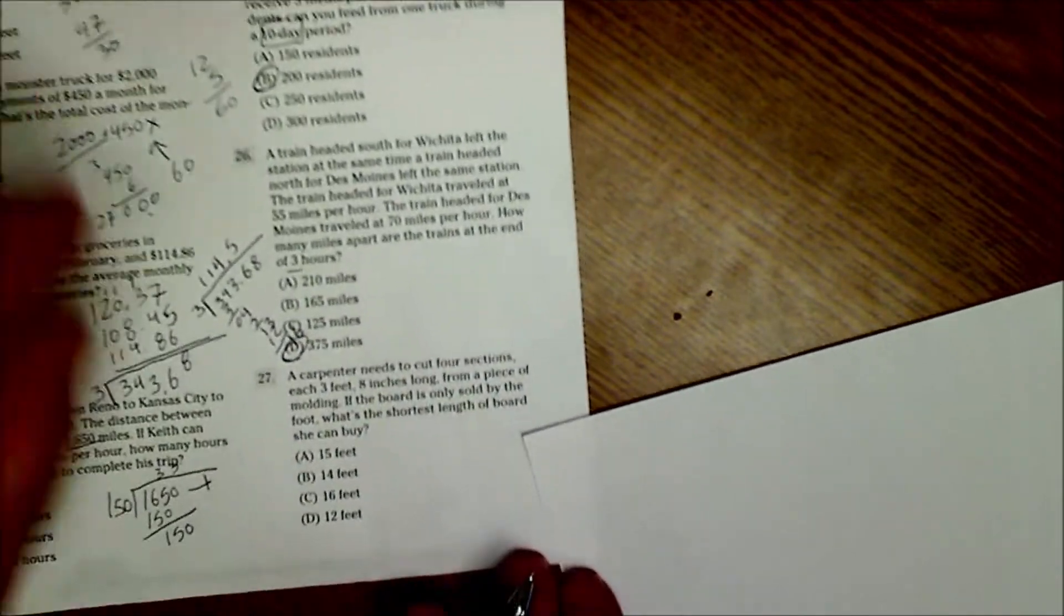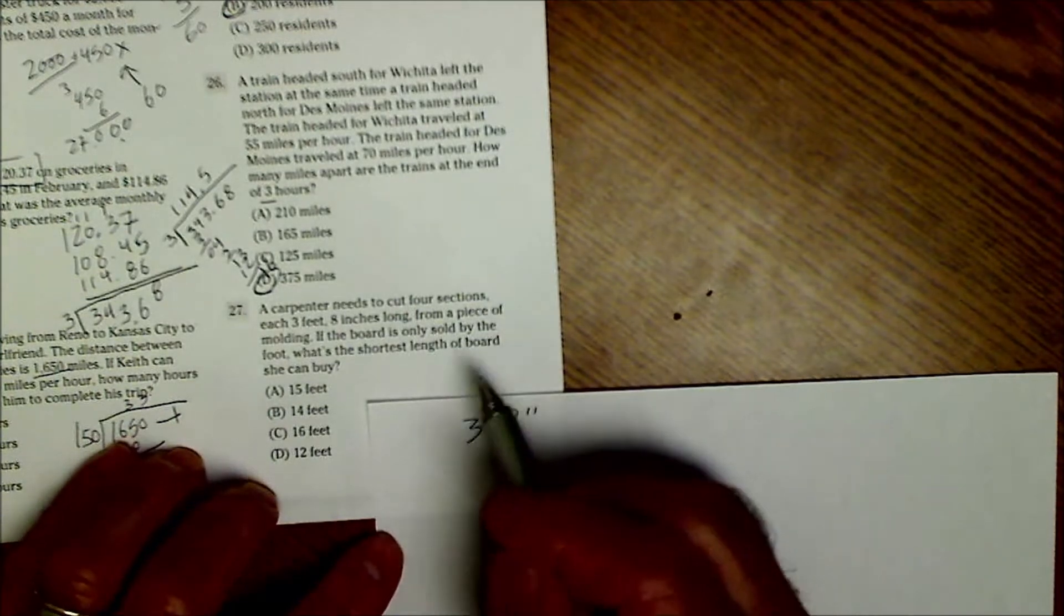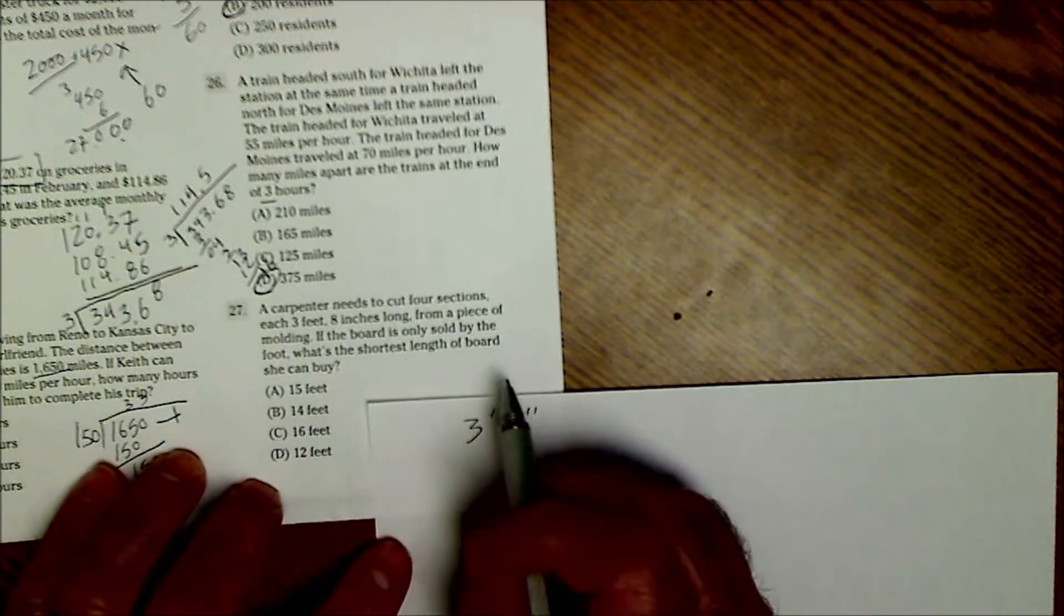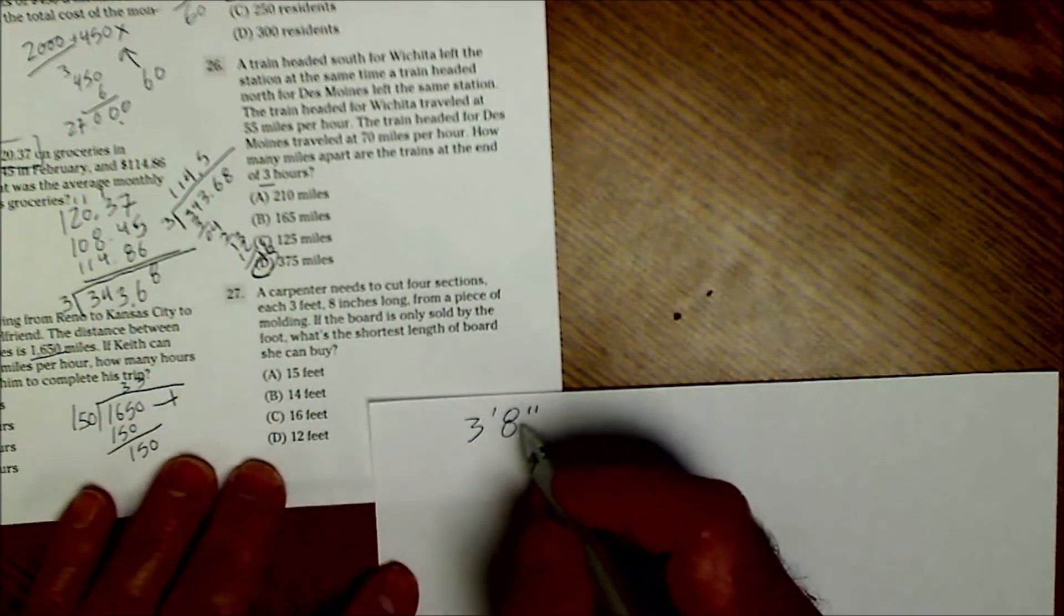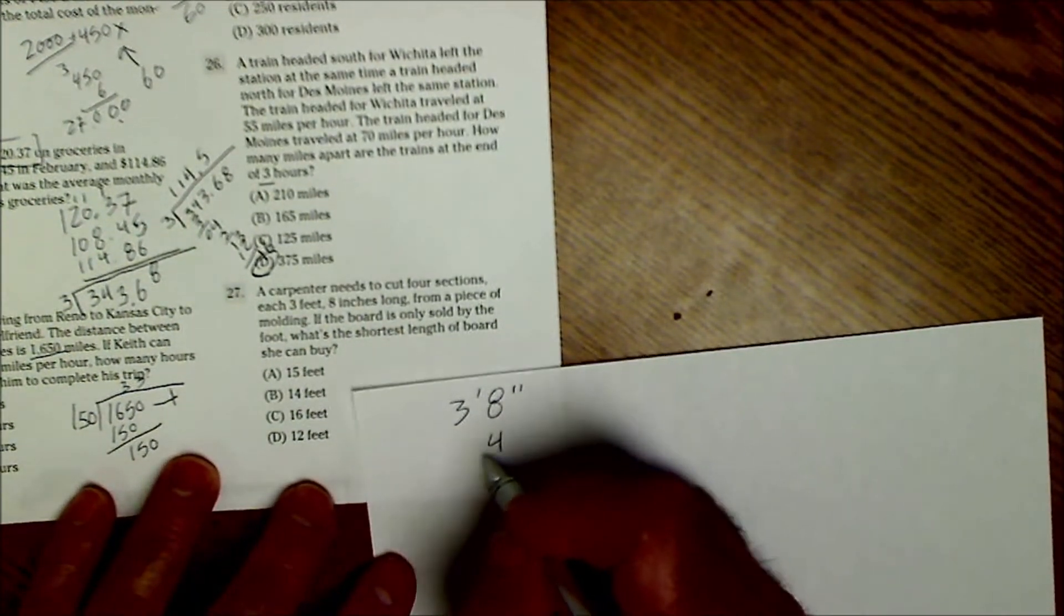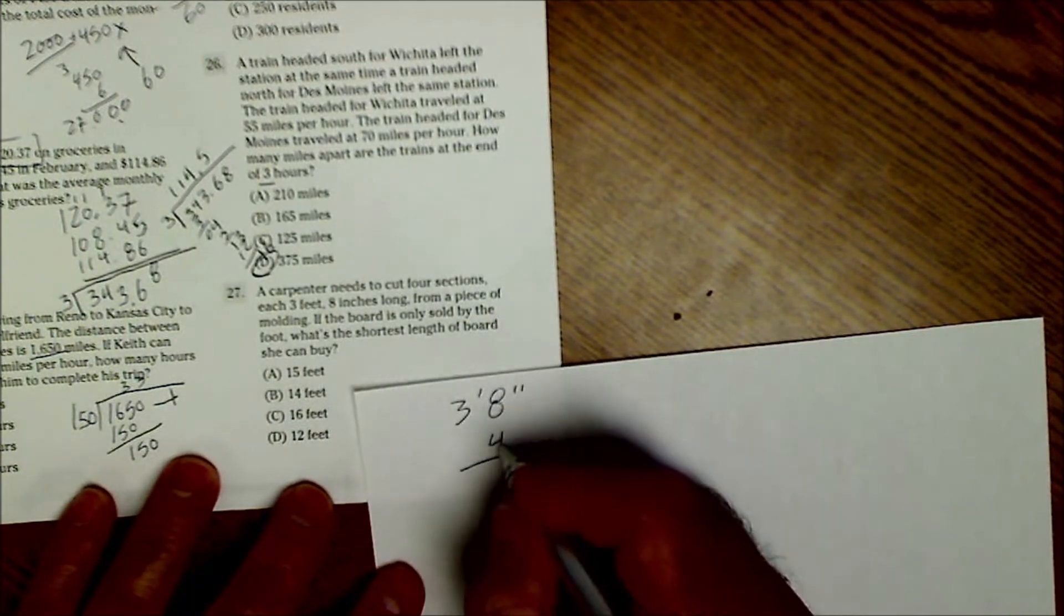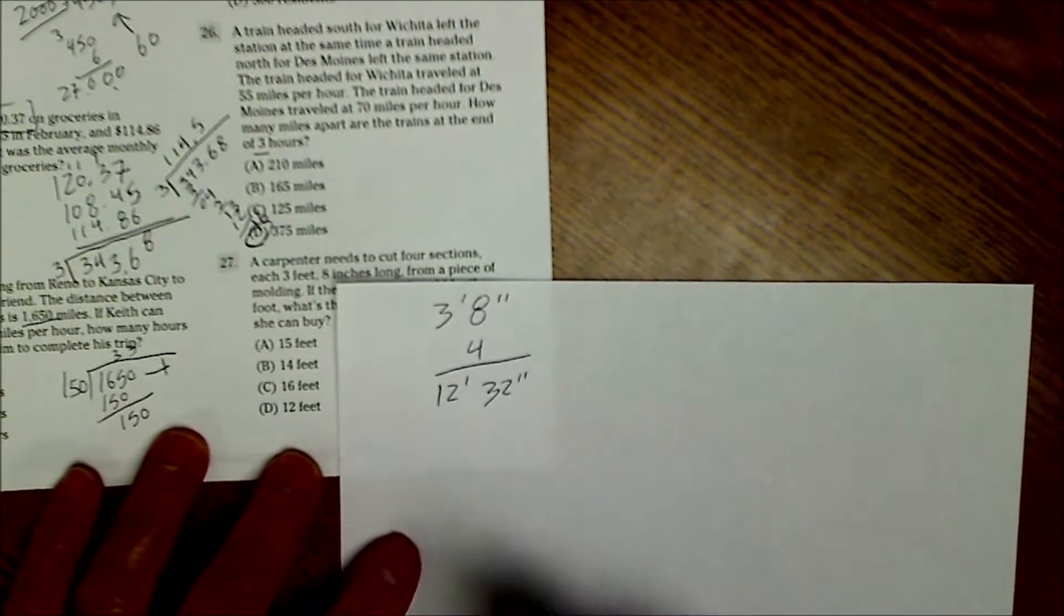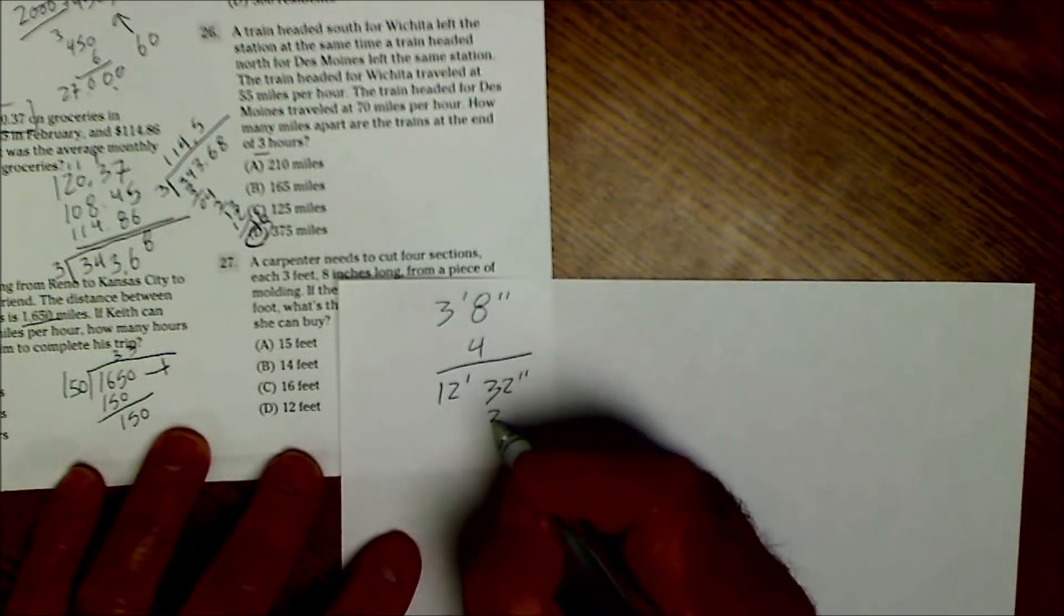Number 27. A carpenter needs to cut four sections each three feet, eight inches from a piece of molding. And if the board is only sold by the foot, what's the shortest length of board? So we got four sections. I'm going to multiply it by four. Four times eight is 32 inches. Four times three is 12 feet. So I got 12 feet, 32 inches. 12 inches to the foot. So I'm going to take 24 out of here. 24 inches out of here is going to make that 14 feet.